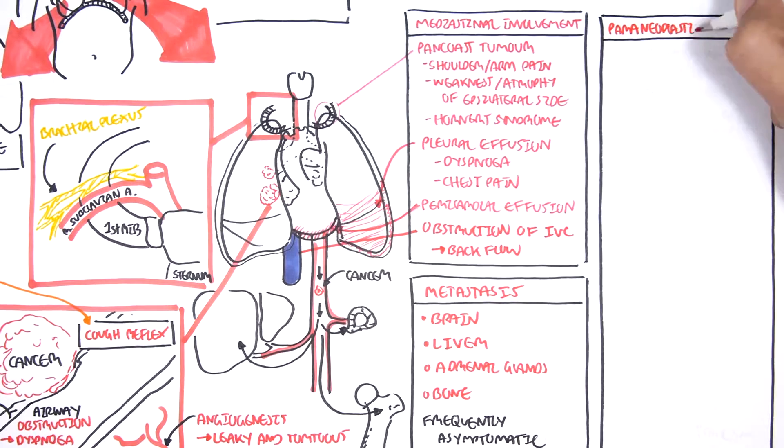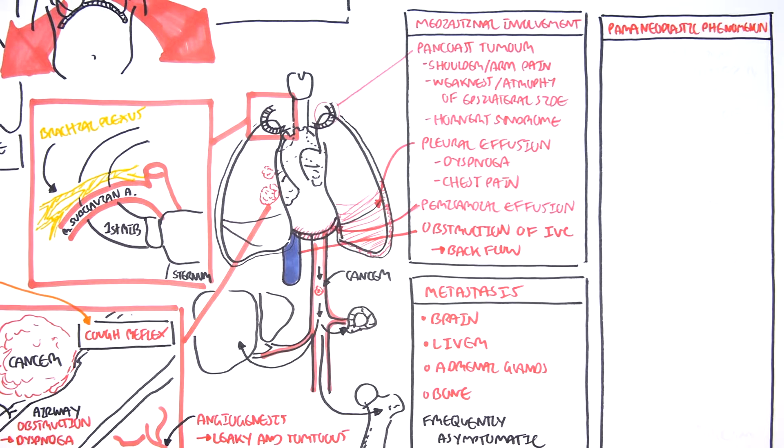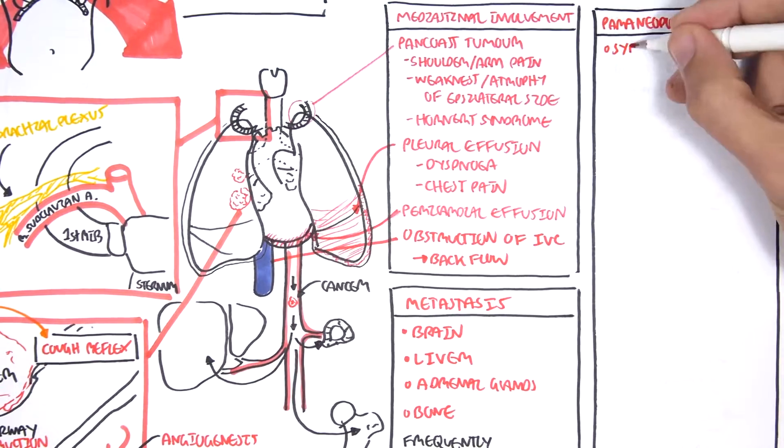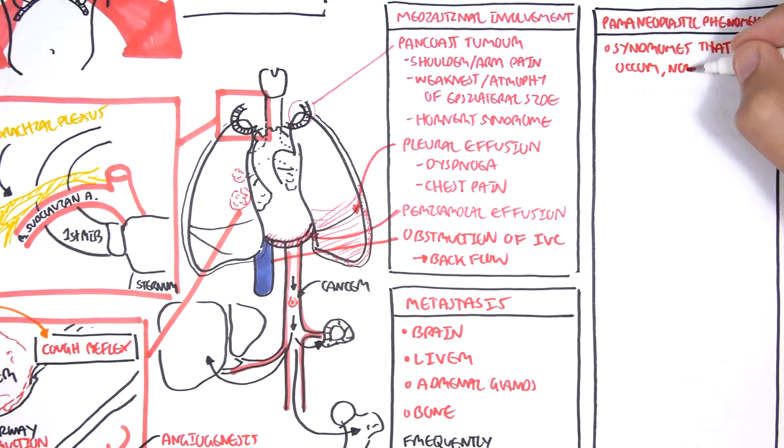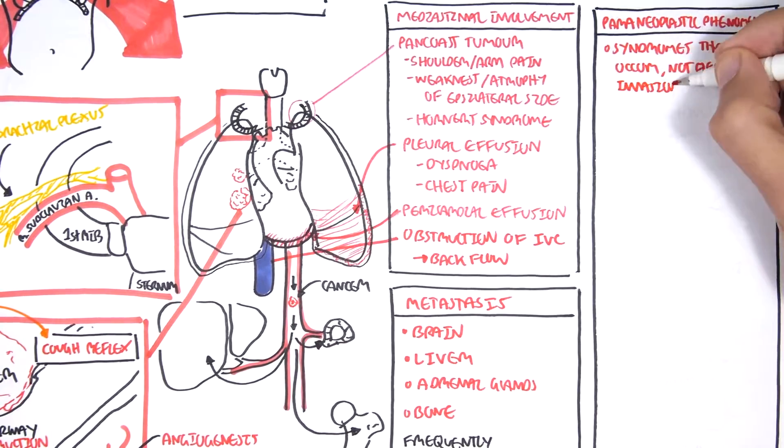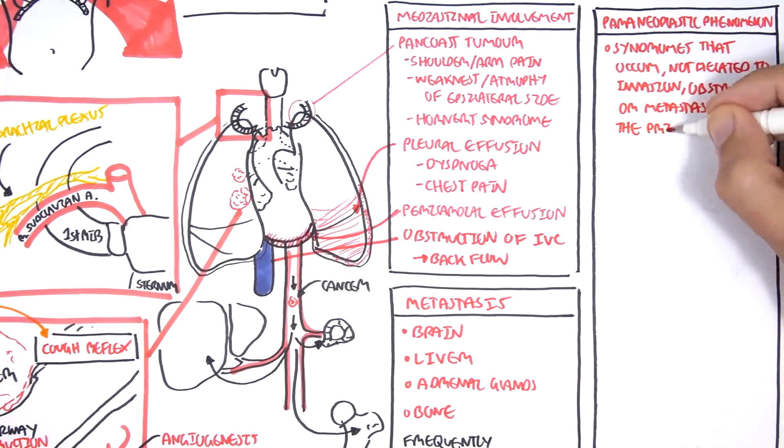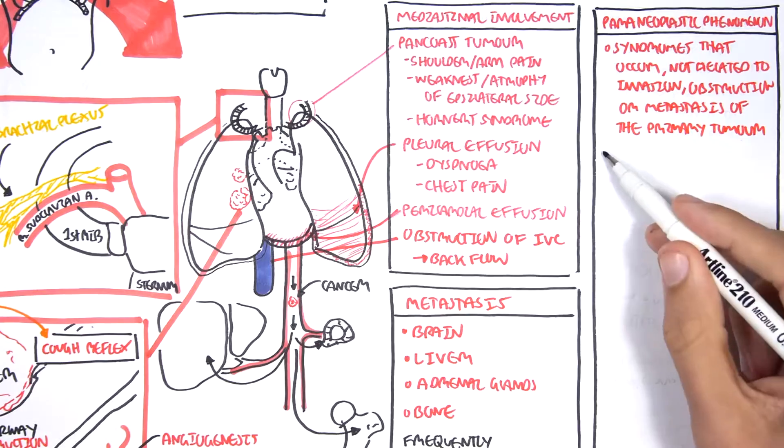Let us learn a bit more about what this encompasses. So the paraneoplastic syndrome typically occurs in small cell lung cancer as well as squamous cell carcinomas. Paraneoplastic syndrome are syndromes that occur not related to invasion, obstruction, or metastasis of primary tumor.